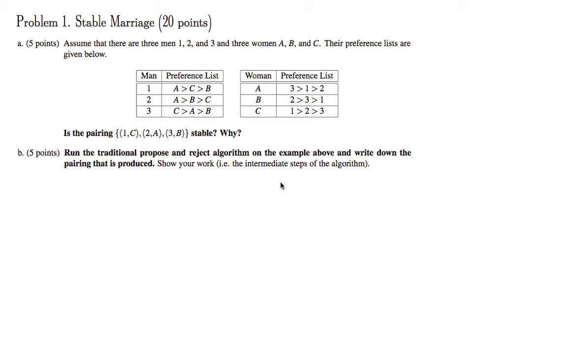Stable marriage. Let's look at part A. So in part A, you're given the preference list for three men and three women, and you're asked whether the pairing 1C, 2A, and 3B is stable.